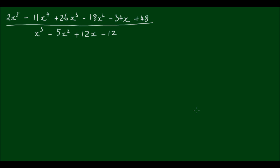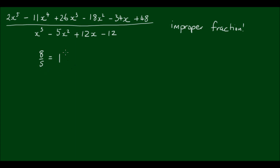The first thing to notice is that the numerator polynomial is of a higher degree than the denominator, so what we have here is an improper fraction. When we have numerical improper fractions, such as 8 over 5, we can turn them into mixed numbers by first dividing the numerator by the denominator — so 8 divided by 5 is equal to 1 — and then expressing the remainder as 3 fifths. We'll use the exact same principle to turn this improper fraction into the sum of a polynomial plus a proper fraction.